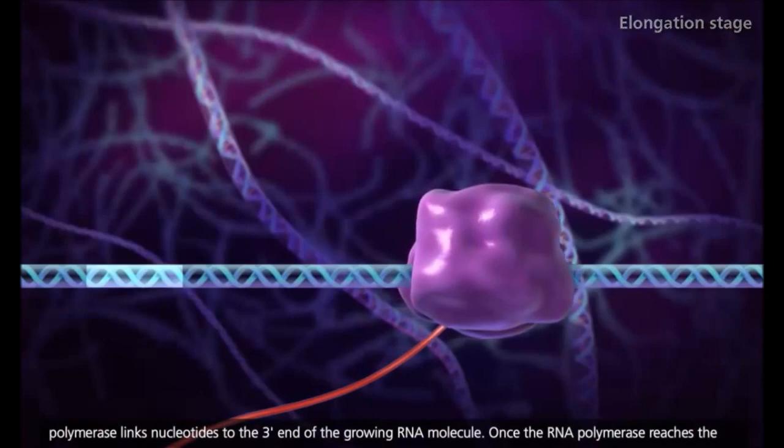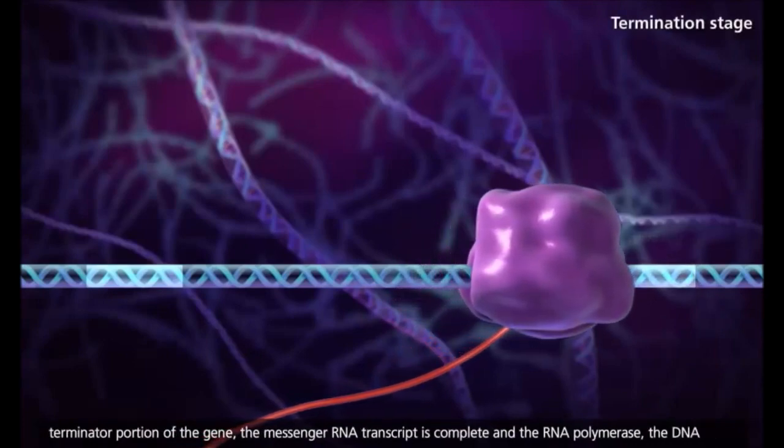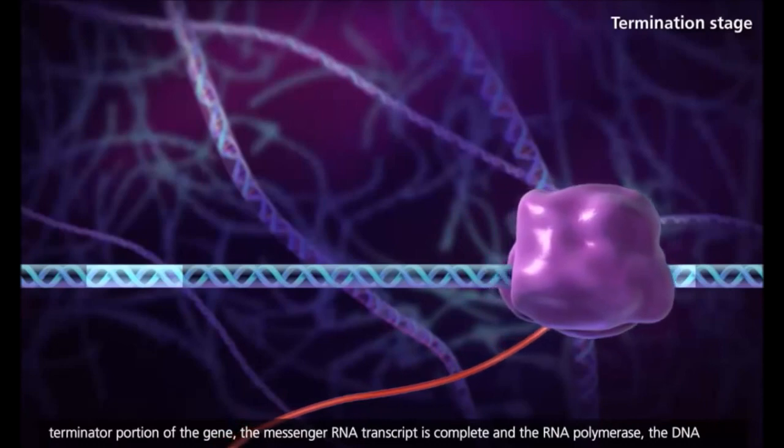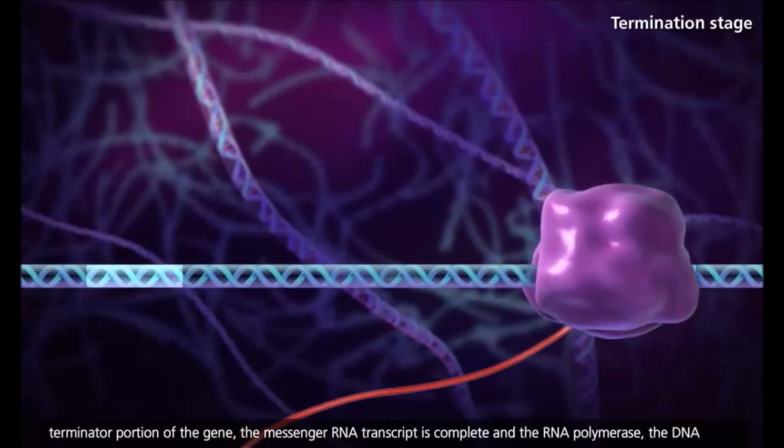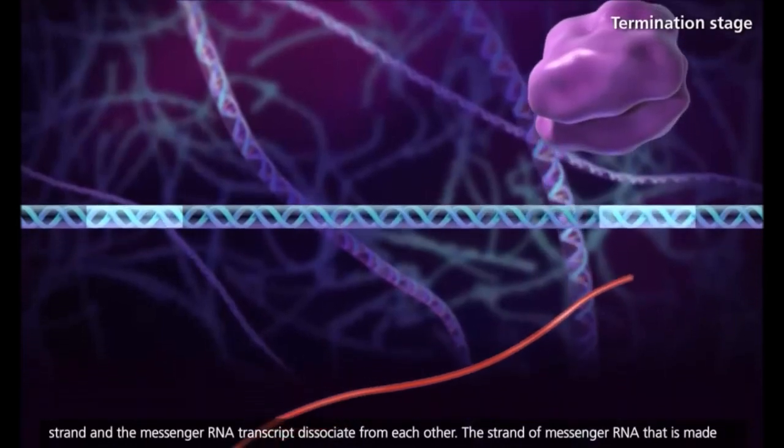Once the RNA polymerase reaches the terminator portion of the gene, the messenger RNA transcript is complete, and the RNA polymerase, the DNA strand, and the messenger RNA transcript dissociate from each other.